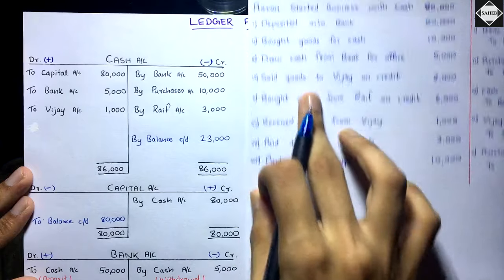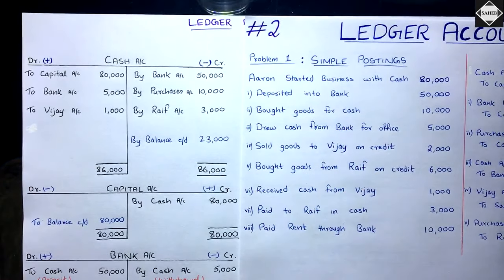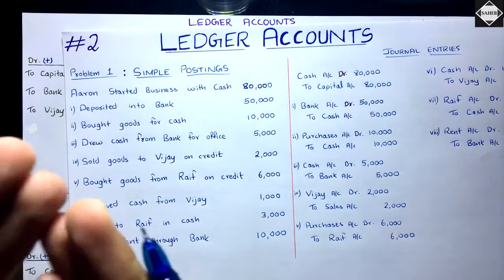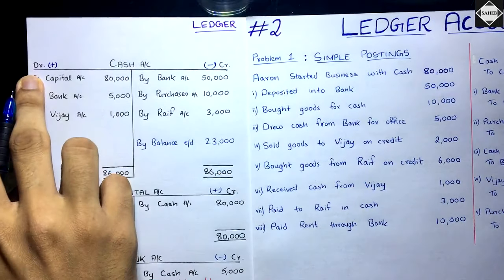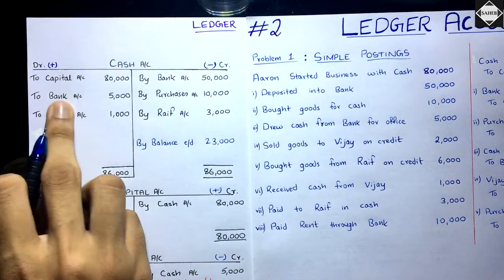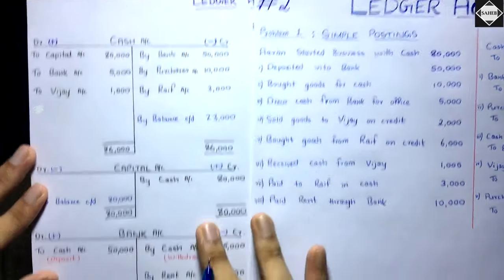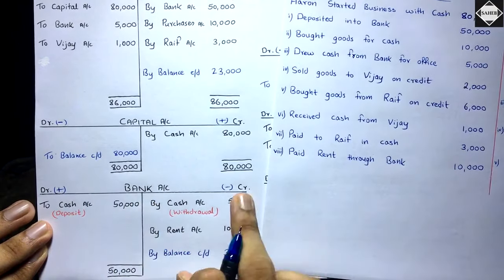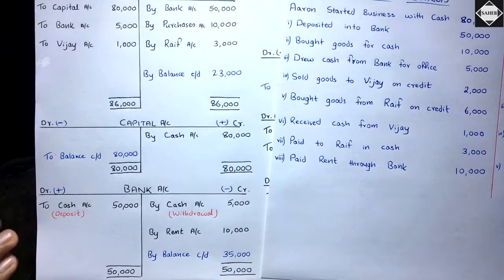Next: drew cash from bank for office use 5,000. Journal entry: Cash Account debit, to Bank Account 5,000. Cash in hand is increasing from the withdrawal, so: Cash Account debit, to Bank Account 5,000. Then in the Bank Account, the bank balance has been decreased because of the withdrawal, so: Bank Account credit, by Cash Account 5,000. For every transaction, there are two effects — a debit and a credit — and both must be equal.